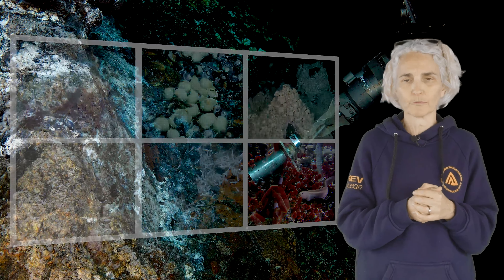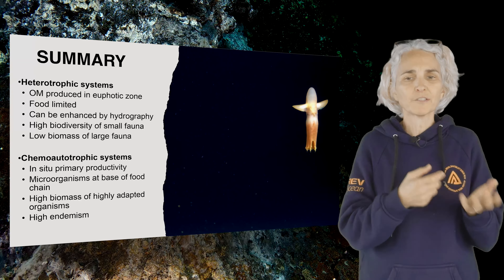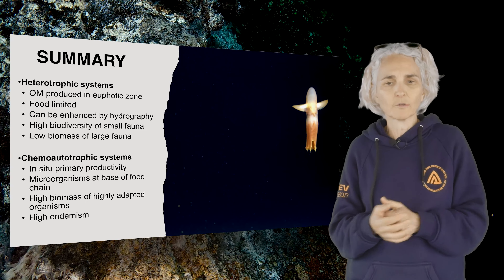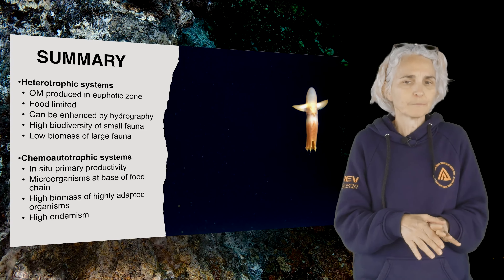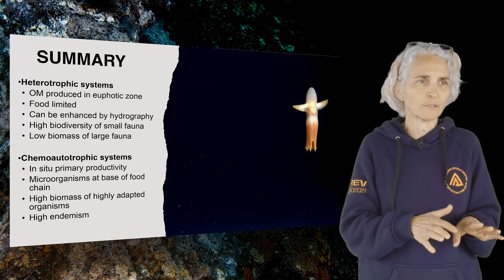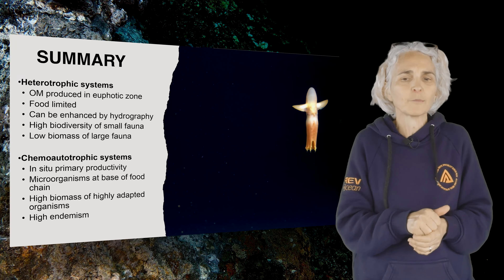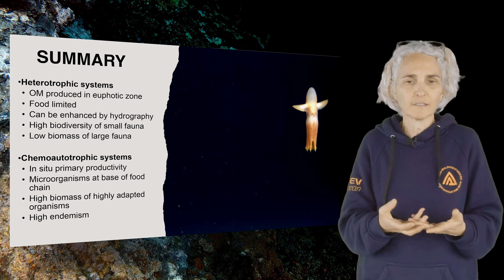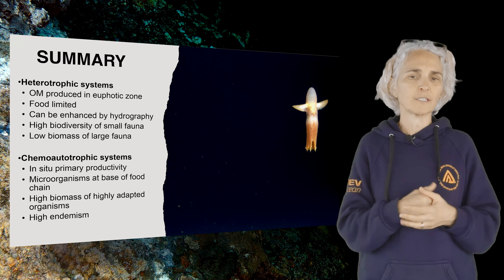In summary, there are two different types of feeding in deep sea ecosystems. In heterotrophic systems, organic matter is produced in the euphotic zone using solar energy, so deep sea heterotrophic ecosystems are mostly food-limited, though food accumulation can be enhanced by hydrography as in seamounts or canyons. These systems have high biodiversity of small fauna but low biomass of larger fauna. In chemotrophic systems like hydrothermal vents and cold seeps, there is in-situ primary productivity from microorganisms, producing high biomass of highly adapted, often very large organisms with high endemicity — these animals often live only in hydrothermal vents and cold seeps.